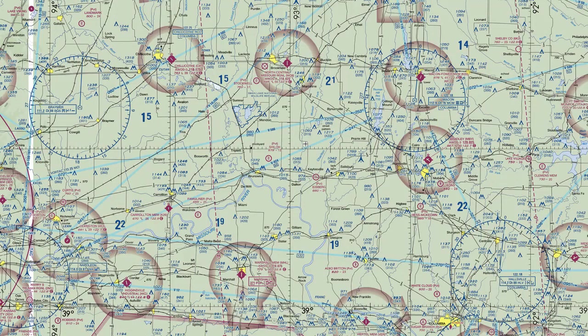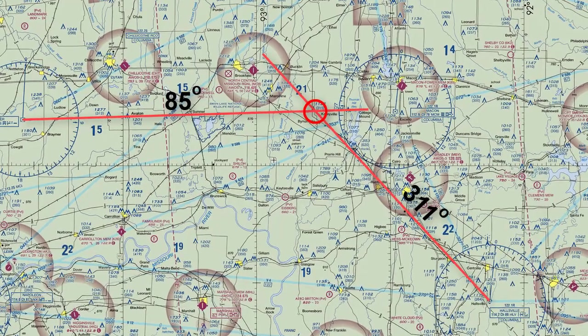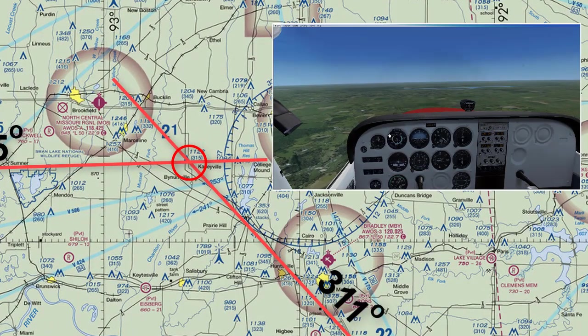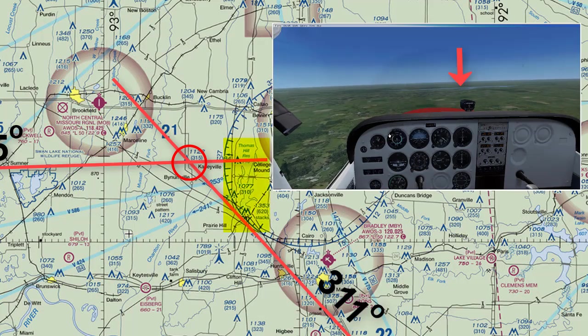Now I can go to the chart and draw lines from each VOR station. For the Hallsville VOR station, I want to draw a line representing the 311 degree radial. From the Bramer VOR station, I want to draw a line representing the 85 degree radial. Wherever these two lines intersect is where I am located. I can see on the chart, as a confirmation, that I am near the Thomas Hill Reservoir, which I see out the window.